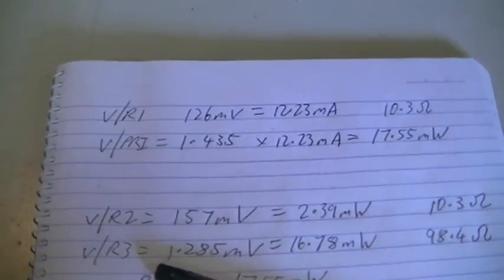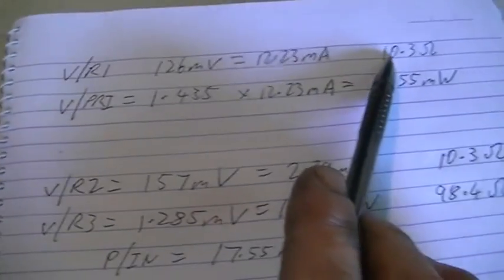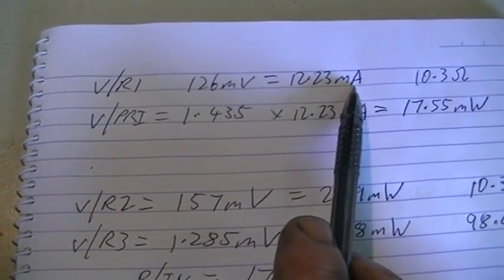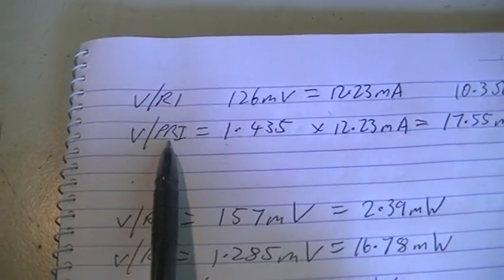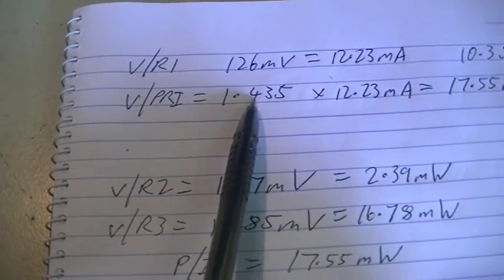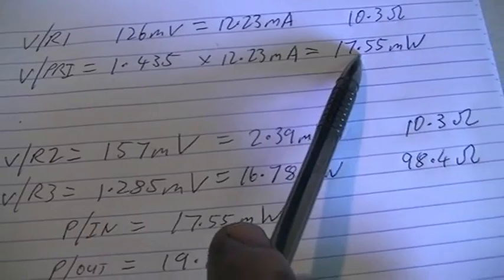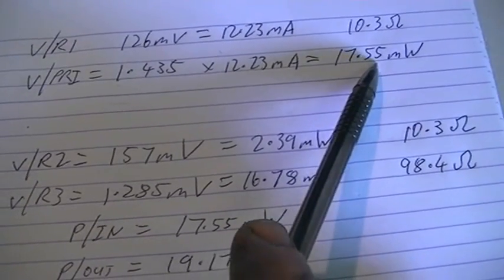Okay, so we have done our number crunching. 126 mV over 10.3 ohms gives us 12.23 mA of current, and our voltage across our primary was 1.435 volts. Times that by our current, and our input power is 17.55 mW.